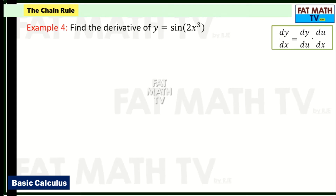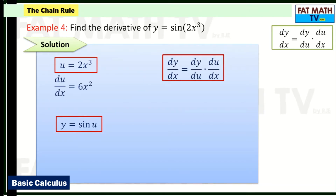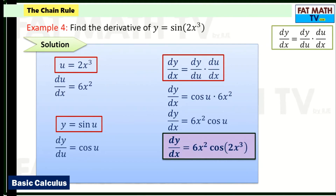Example 4: find the derivative of y = sin(2x³). Let u = 2x³, so y = sin(u). The derivative of 2x³ is 6x². The derivative of sin(u) is cos(u). Multiplying: dy/dx = cos(u) times 6x² = 6x²·cos(u). Substituting back: dy/dx = 6x²·cos(2x³).